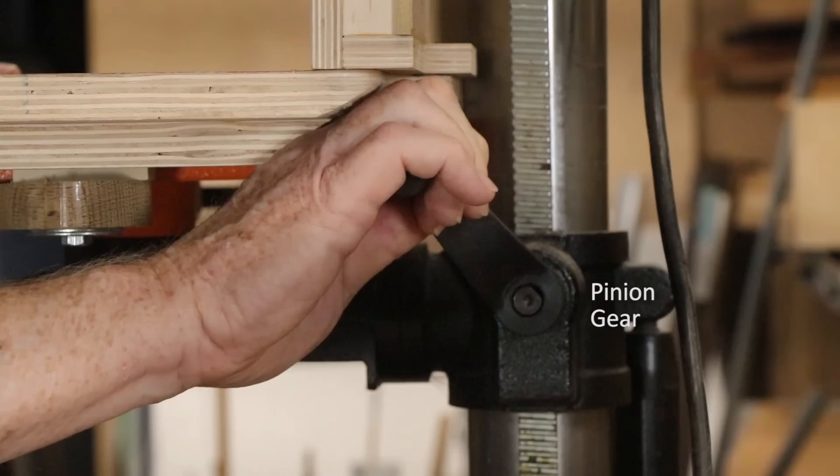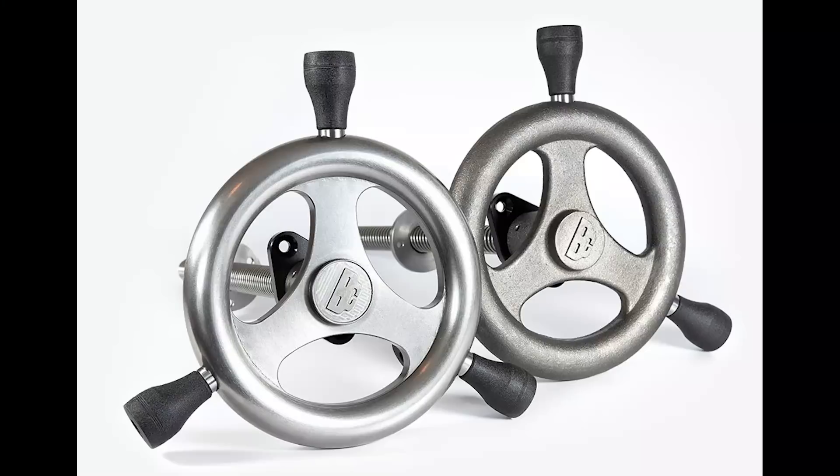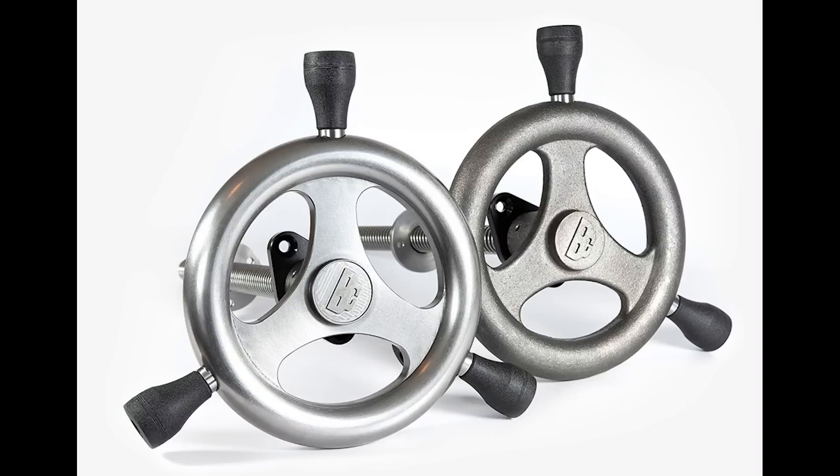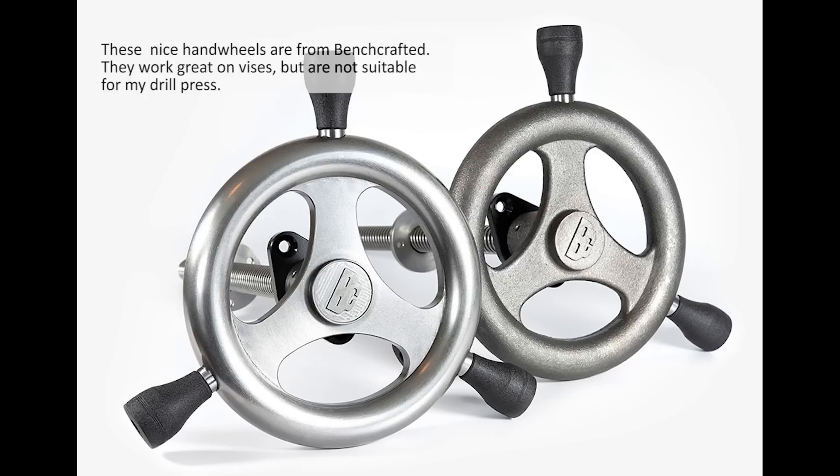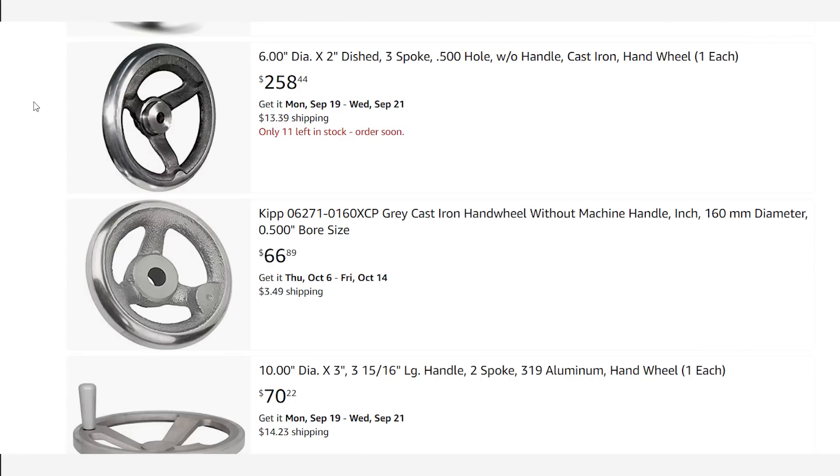Now there's no practical way to change the location of the pinion gear relative to the table. So I thought I could replace the crank handle with a hand wheel. Now there are hundreds of hand wheels on the market, but finding a wheel that was the right size, the right shaft diameter, and a reasonable cost turned out to be difficult.